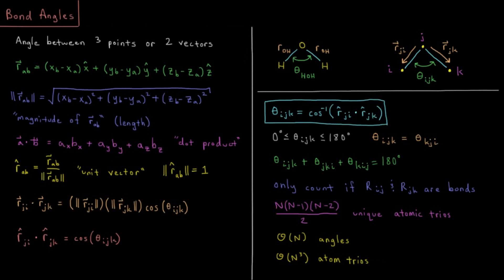This video will discuss how to compute bond angles in molecules and demonstrate a simple Python script that computes those from XYZ files. An angle geometrically could be defined as the angle between any three points or the angle between any two vectors. We're going to use both of these definitions to help us in this video. So let's say we have this water molecule.